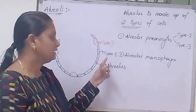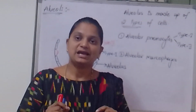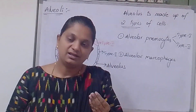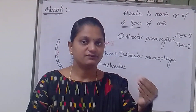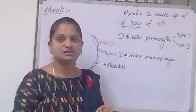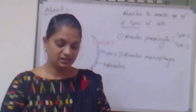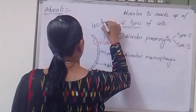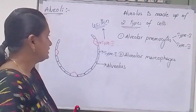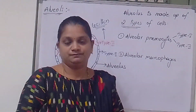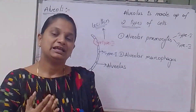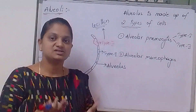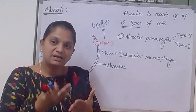Type 1 pneumocytes are responsible for gaseous exchange between alveoli and blood. Type 2 pneumocytes release a surfactant — it is a phospholipid called lecithin. This lecithin promotes the membrane to enable more gaseous exchange.